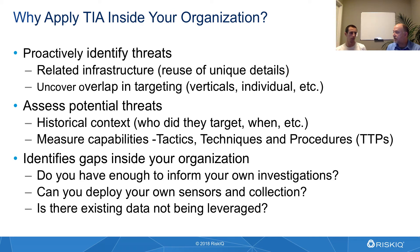A more sophisticated actor may actually go out and compromise someone else's infrastructure, use a third-party domain, put it on top of that compromised infrastructure, and launch their attack from there — so they're not revealing anything or leaking any data about themselves. Whereas the less sophisticated one has leaked a whole bunch of information. By analyzing the data and historical information available to us, we can start to measure the potential sophistication of an adversary.